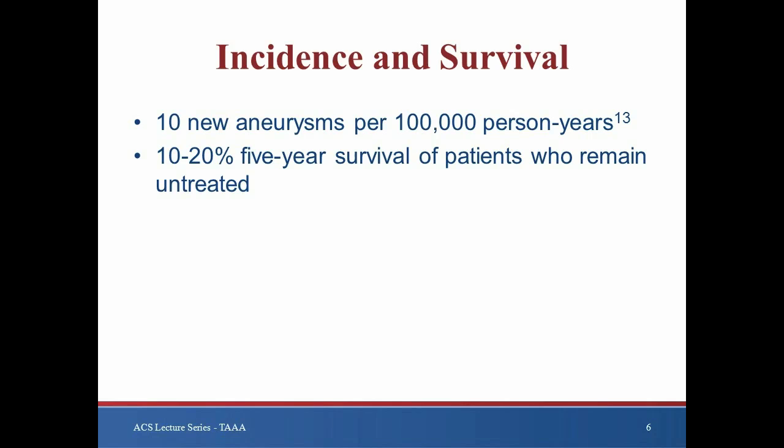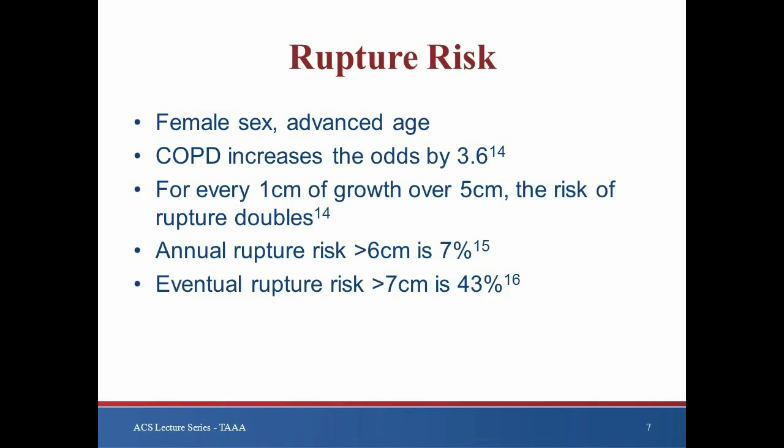Population studies have revealed the incidence of thoracic aortic aneurysms to be in the range of 10 new aneurysms per 100,000 person years. Up to 80% of these will eventually rupture, owing to a 10-20% 5-year survival of patients who remain untreated. Females develop TAAAs later than men, but are at a higher risk of rupture, and advanced age is also associated with a higher risk.